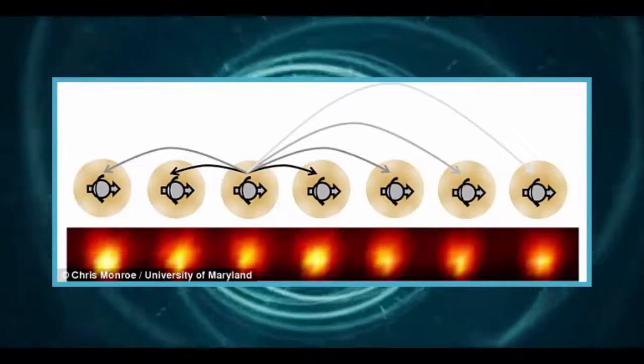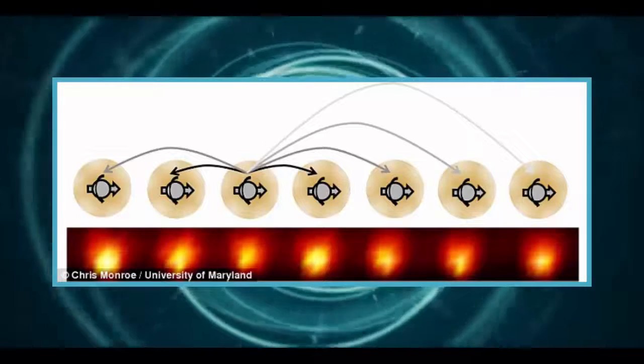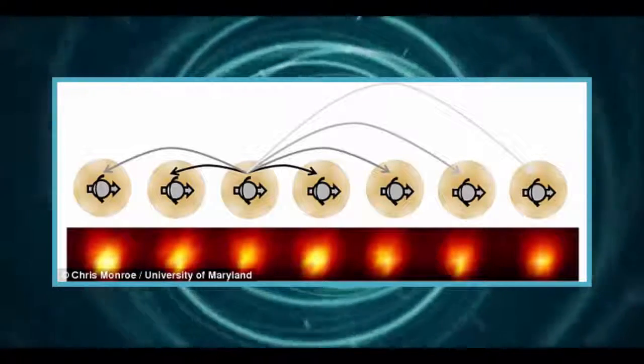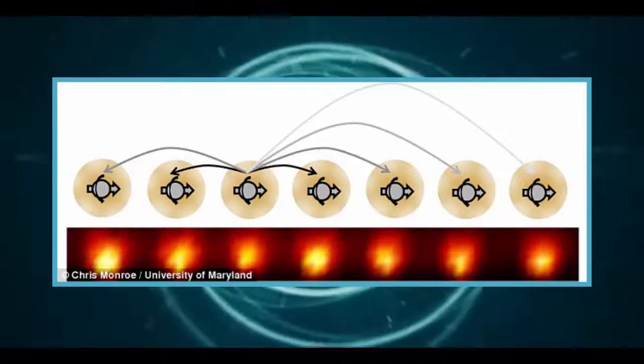A second group of researchers from Harvard University, also working with Berkeley physicist Norman Yao, created a time crystal using an artificial synthetic diamond. Despite the different approaches, both efforts resulted in time crystalline behavior.